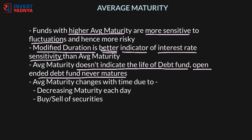Average maturity of a fund portfolio undergoes a change with the passage of time. As a debt security approaches its maturity date, the length of time to maturity becomes shorter. Thus, even if a fund buys and holds a debt portfolio, the average maturity keeps on decreasing till the security held reaches its maturity date. Also, if a fund sells one security and buys a fresh one, its average maturity will change too, since each security has its own maturity period.